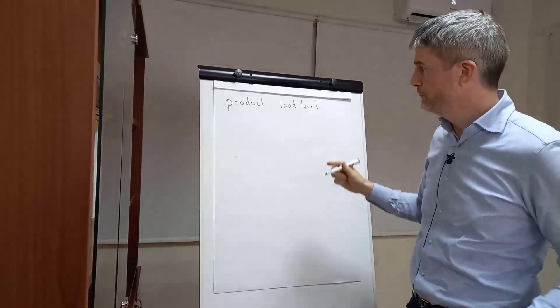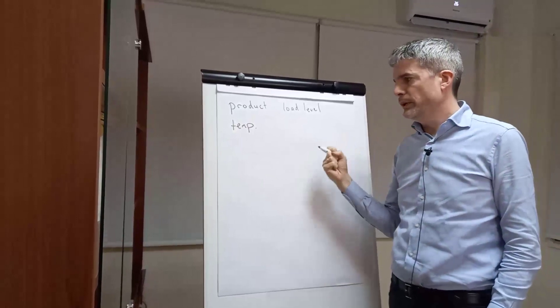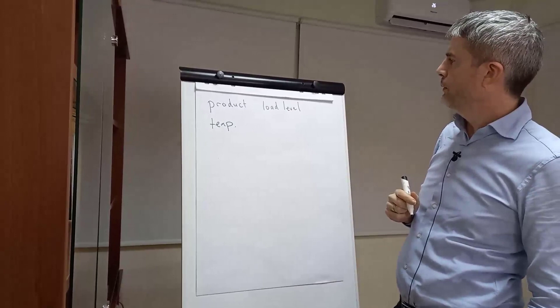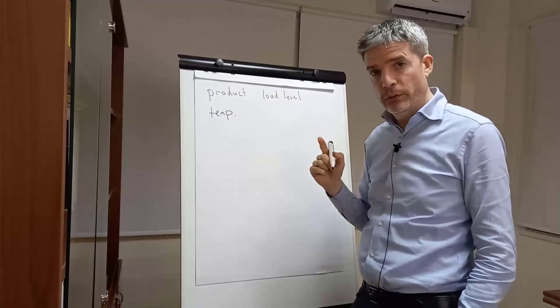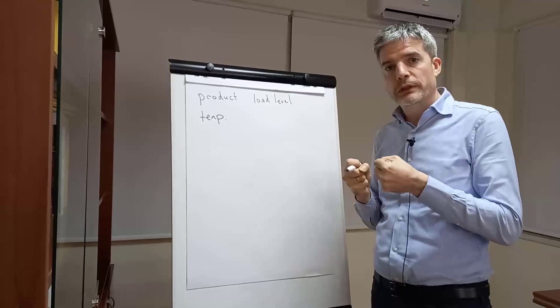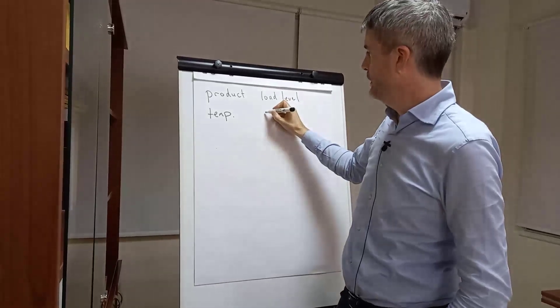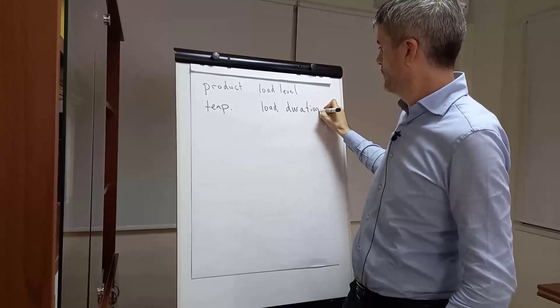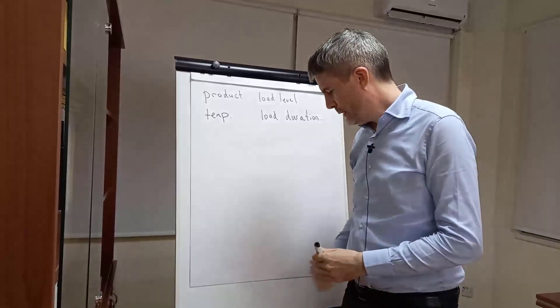So most polymers do not have a linear elasticity. Depending on the load level, their stiffness will actually vary. We have the temperature - so polymers will have different stiffnesses at different temperatures. And the other one is duration of loading. So a polymer will creep a little bit over time, so you'll get a slightly higher stiffness in the short term and then over time that will reduce.